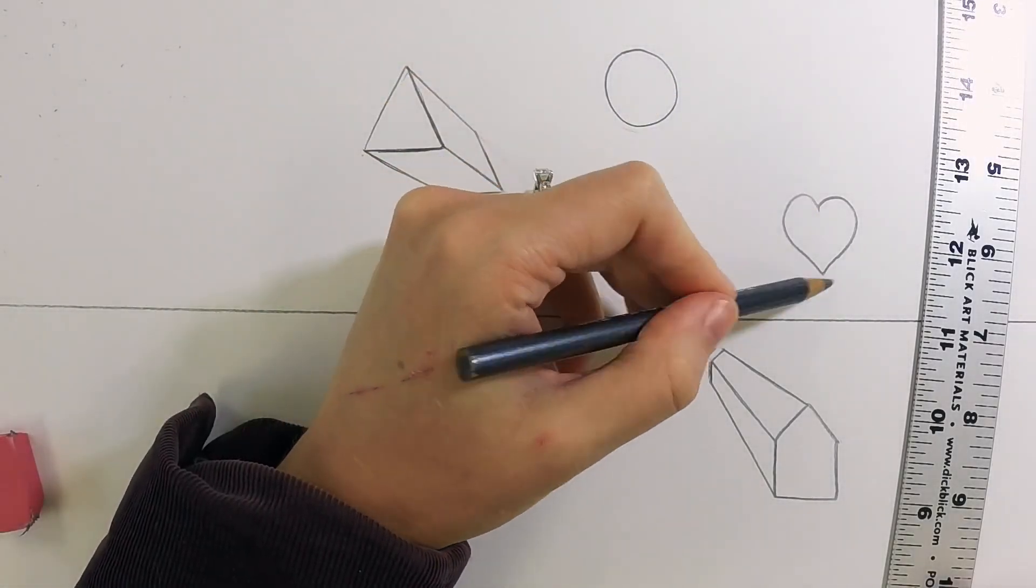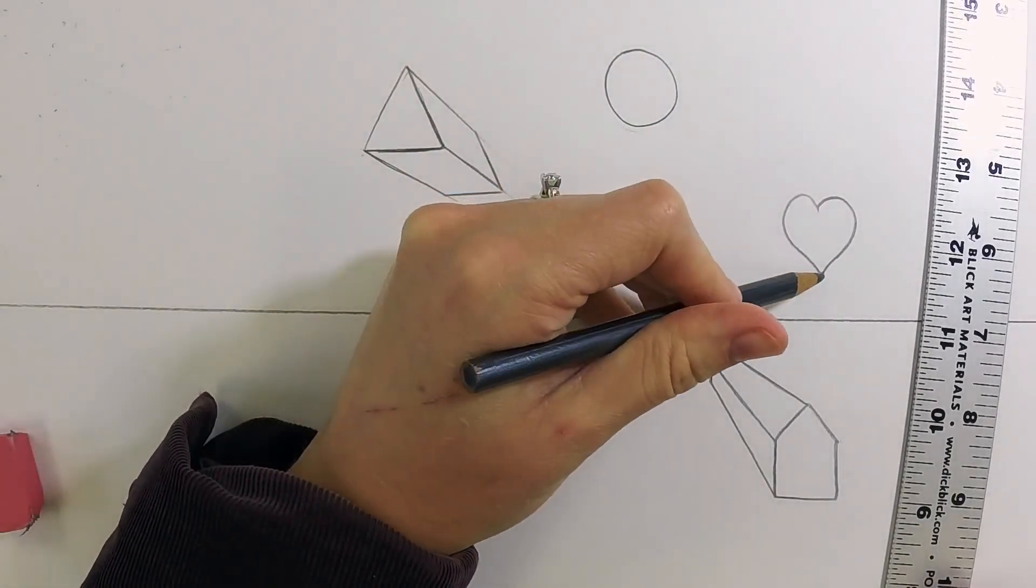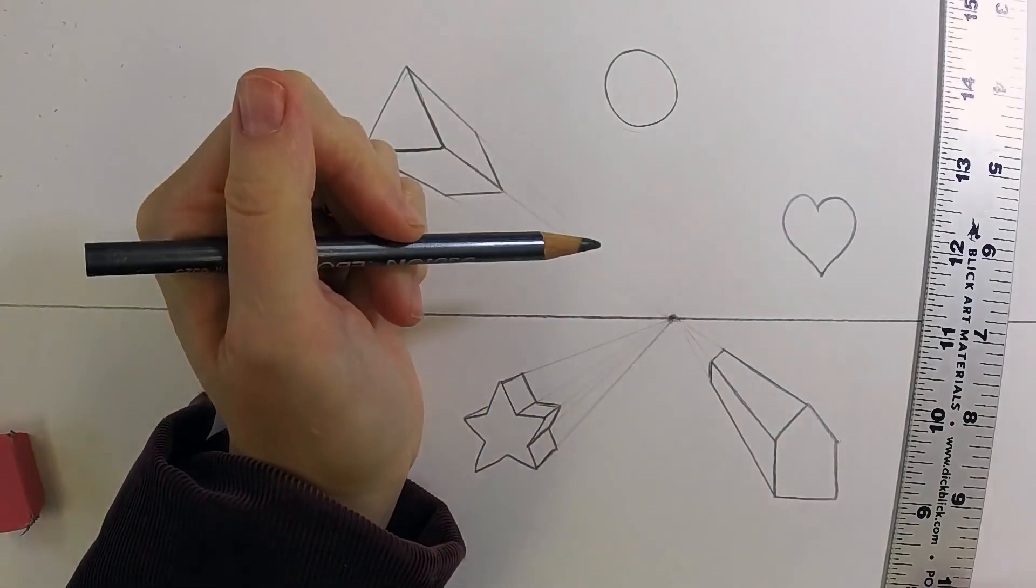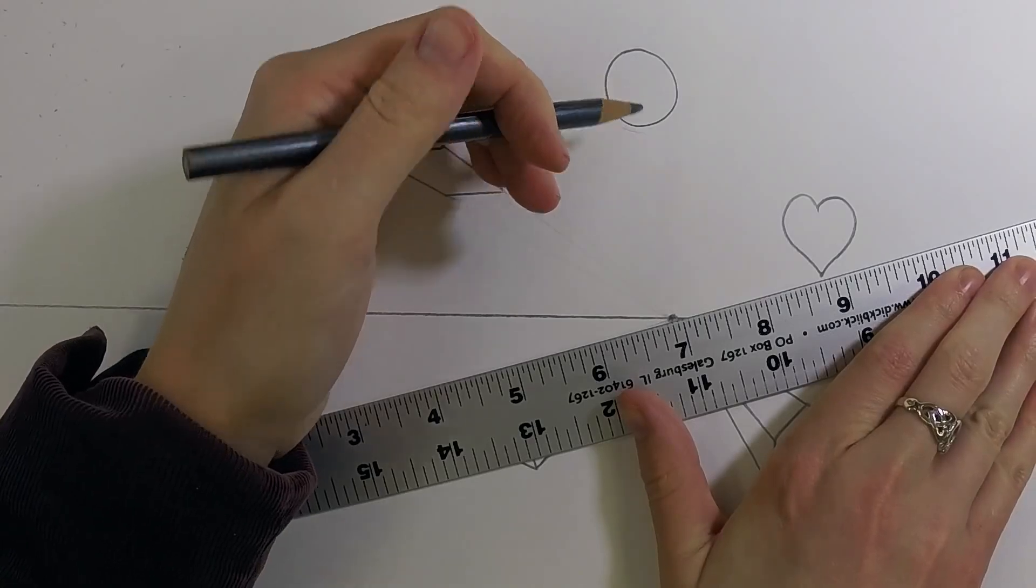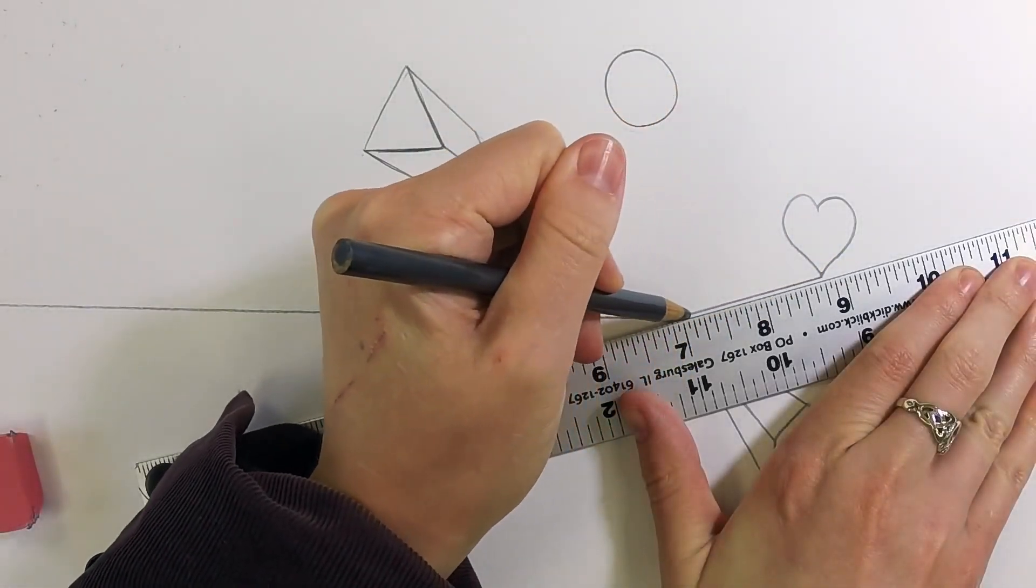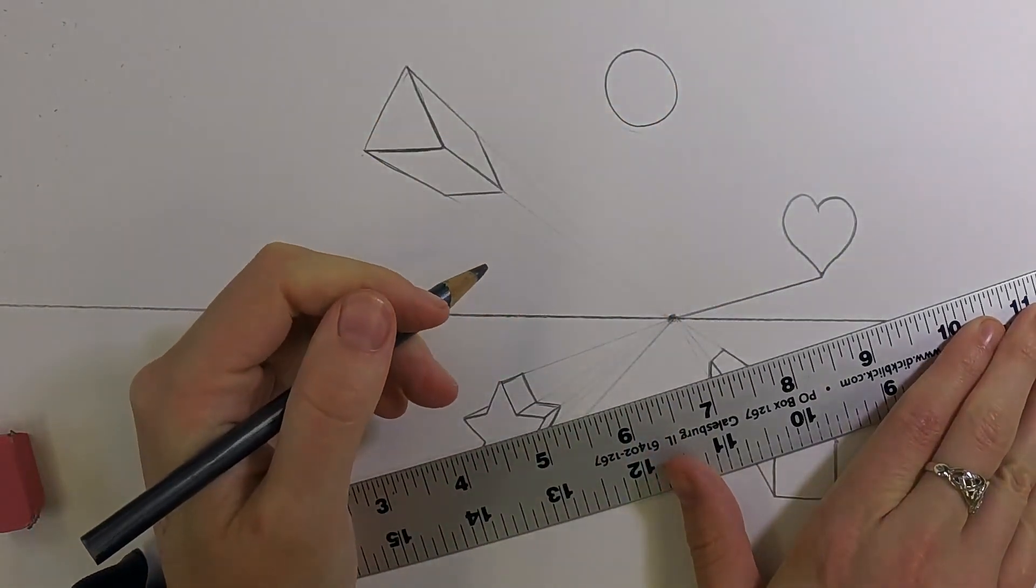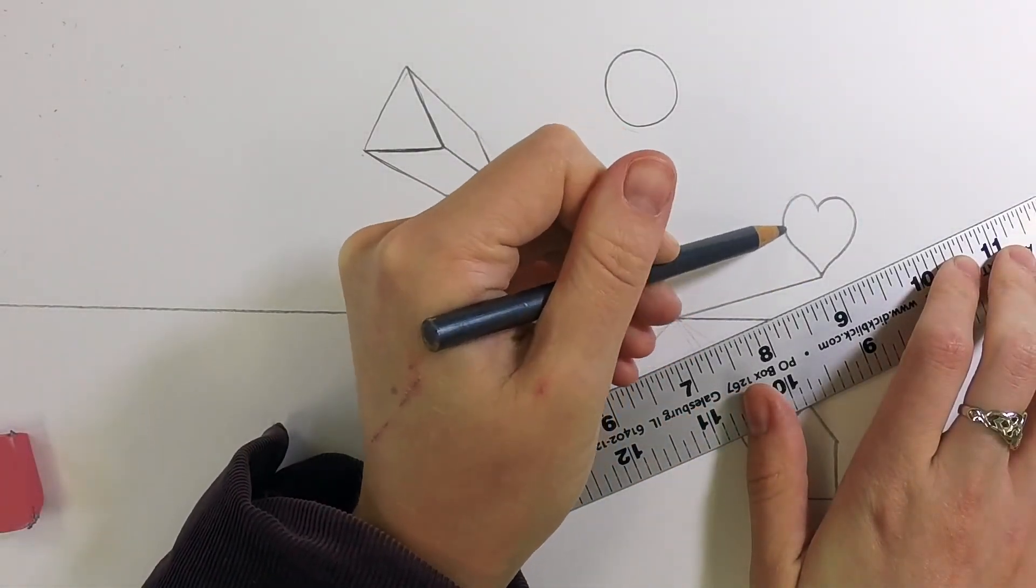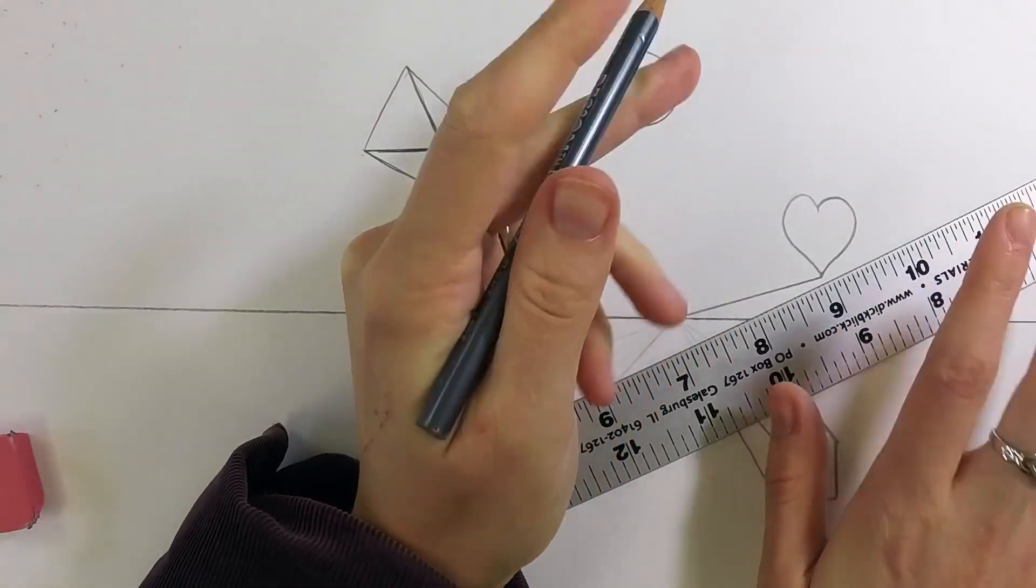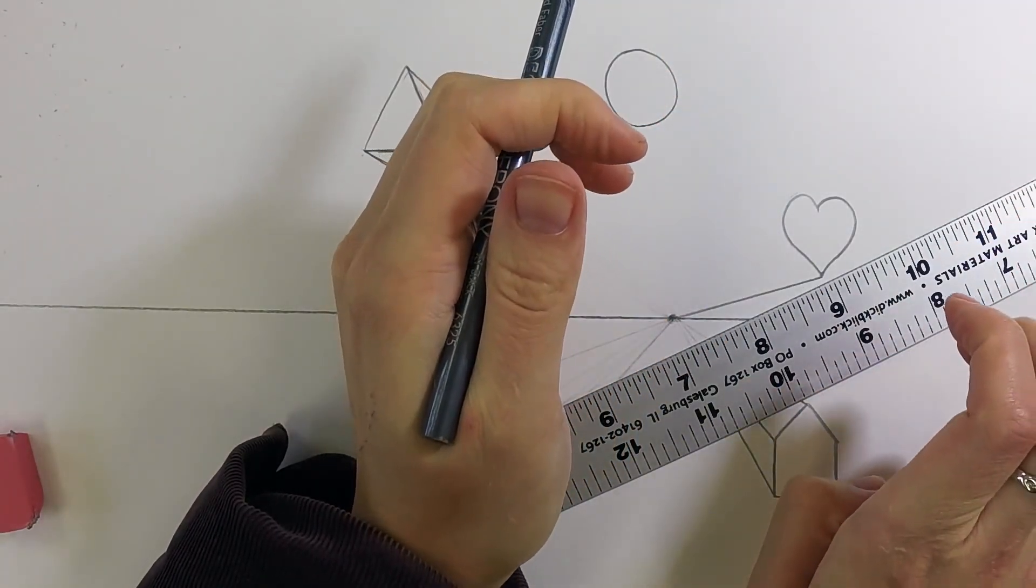Now what we have are some rounded shapes. So these are a little more challenging than ones with definite angles. So with the heart, we'll start with the one point that we know is actually there, and we'll line that up. But then we have to find a point, so to speak, on this curved edge. So how do you do that? It's curvy, it's not pointed.